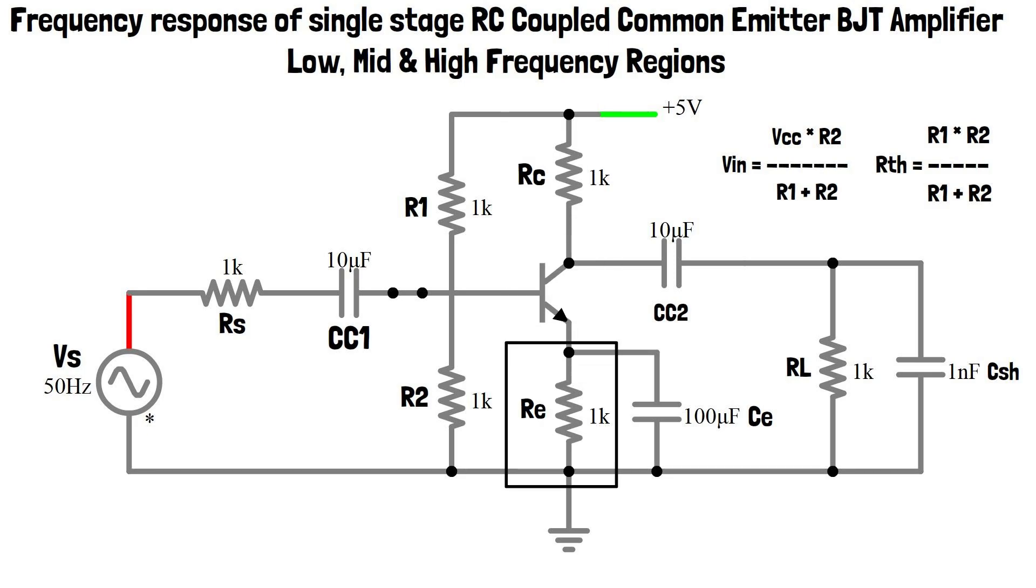R2 is called as emitter stabilized bias resistor. It improves the DC bias stability. Stability equals 1 plus beta by 1 plus beta times R2 by Rb plus R2.